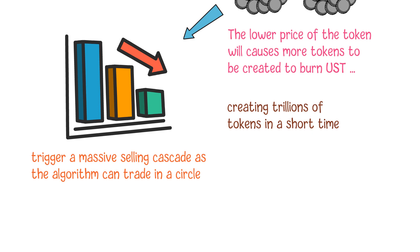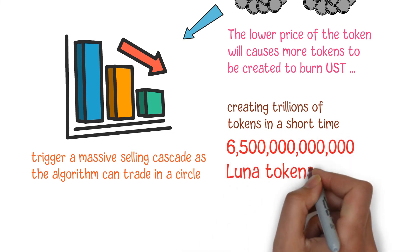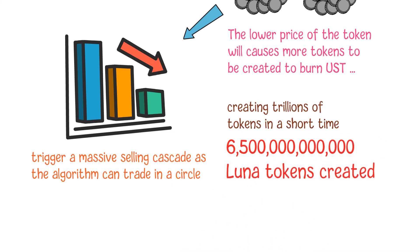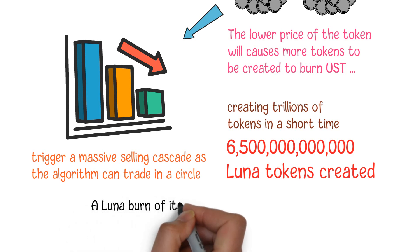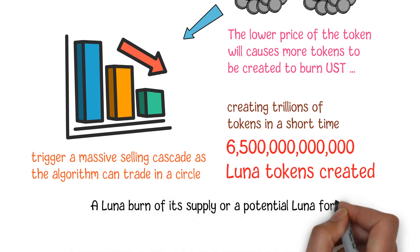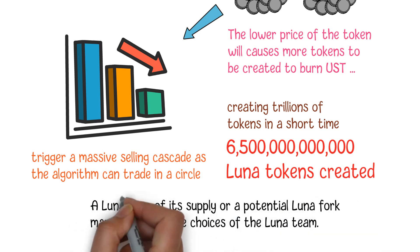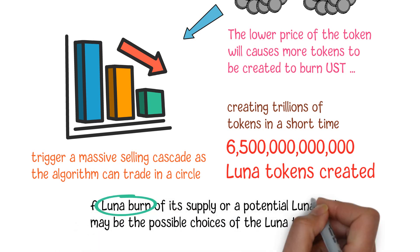Eventually, it results in LUNA's price going to zero. As of May 13, there were 6.5 trillion LUNA tokens created. So far, there are still no official announcements from the LUNA team about how to deal with the huge amount of tokens. A LUNA burn of its supply or a potential LUNA fork may be the possible choices of the LUNA team.